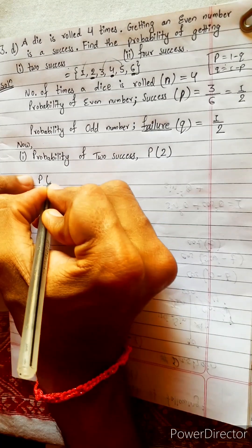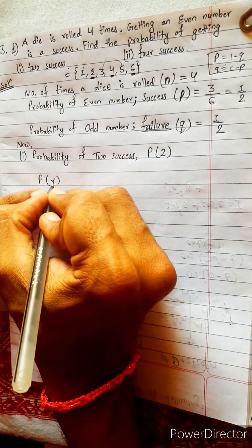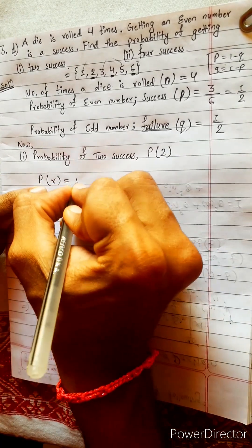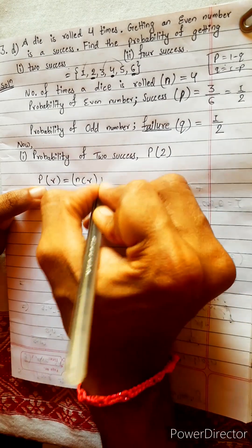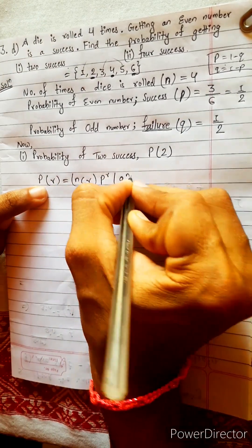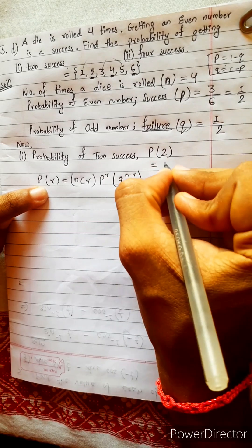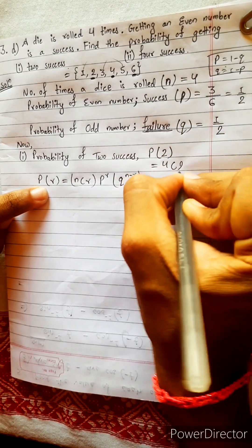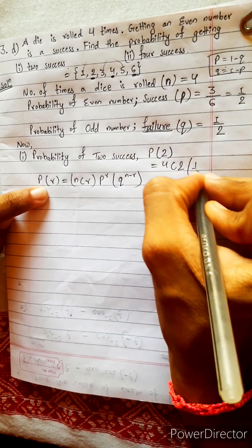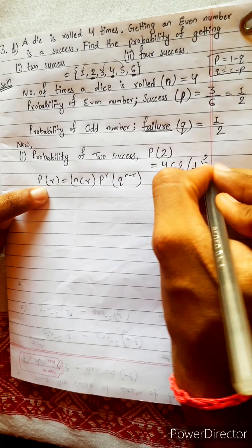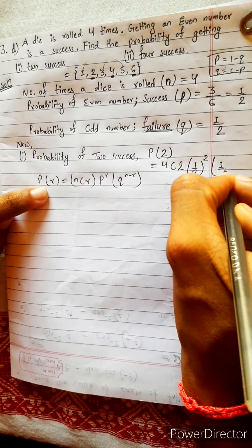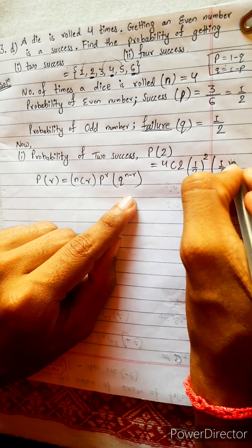Our formula is this: probability of R, number of times success is required. P(R) is nCr multiplied with P power R multiplied with Q power n minus R. This formula we will use here. n means four, 4C2. P is one by two, one by two power R. R is also two. Q also one by two. n means four, four minus two.